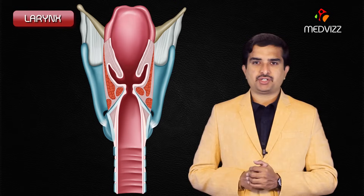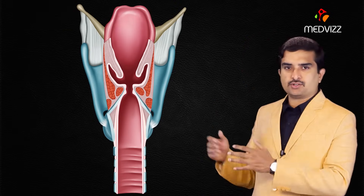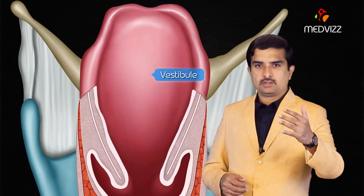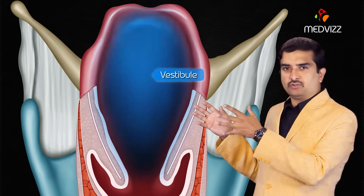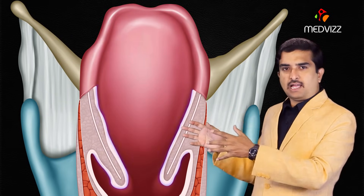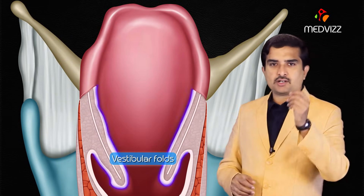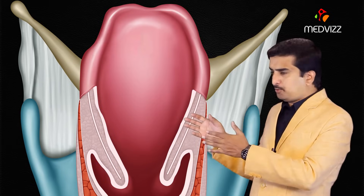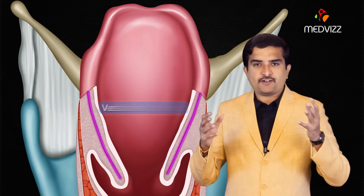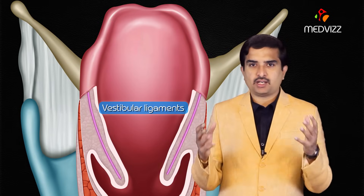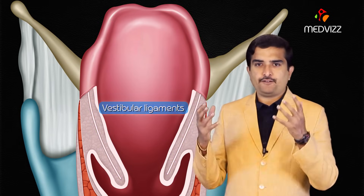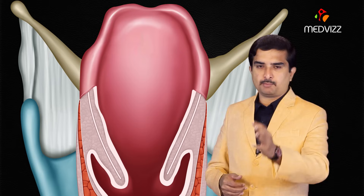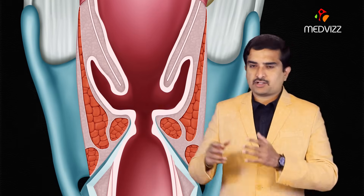The larynx is organized into three major regions. The vestibule is between the entrance of the larynx and the vestibular folds, considered to be false vocal cords. The vestibular folds contain the vestibular ligaments, which are thickened inferior edges of the quadrangular membrane.